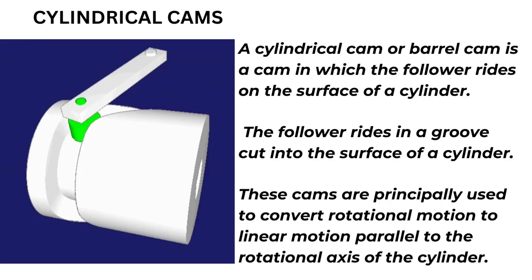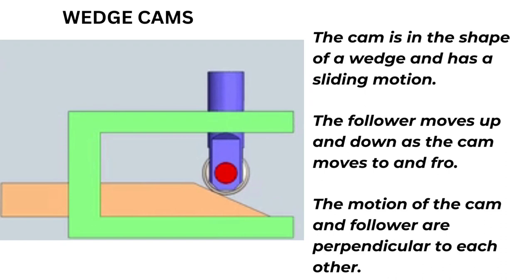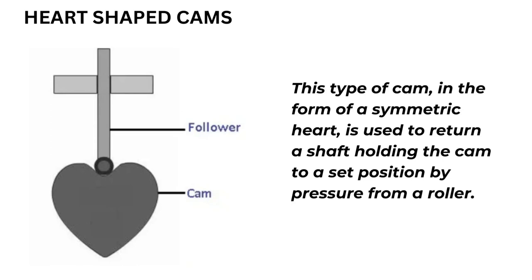Wedge cams: the cam is in the shape of a wedge and has a sliding motion. The follower moves up and down as the cam moves to and fro. The motion of the cam and follower are perpendicular to each other. Heart shaped cams: this type of cam, in the form of a symmetric heart, is used to return a shaft holding the cam to a set position by pressure from a roller.